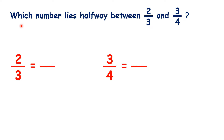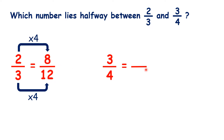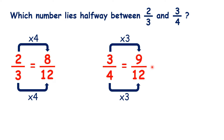So now, which number lies halfway between 2 thirds and 3 quarters? Again, we're going to have to use equivalent fractions to help us. The lowest common multiple of 3 and 4 is 12, so let's try changing them both into twelfths. 2 thirds is the same as 8 twelfths, and 3 quarters is the same as 9 twelfths. Does that help us? Not really, because the number halfway between 8 and 9 is 8 and a half, but we can't write 8 and a half over 12 as our answer.